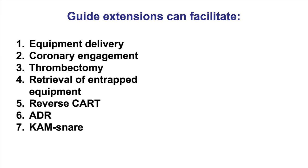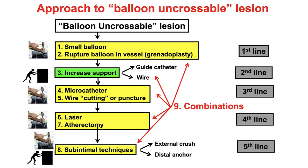Why use guide extensions? There are many potential uses. The most common one is to facilitate equipment delivery. This is an example of a case in which facilitating delivery is important — for balloon uncrossable lesions. When the wire goes through but the balloon does not, after trying a small balloon, the next step is to increase the support, and the guide catheter extension is a critical component of that increase in support.